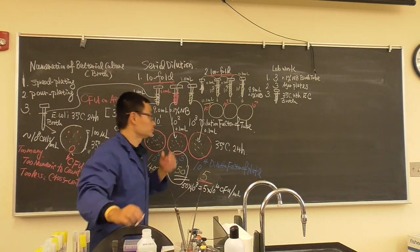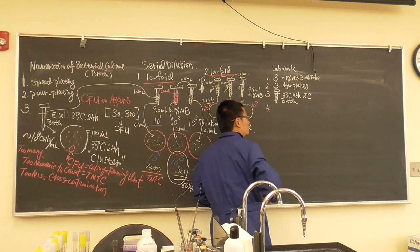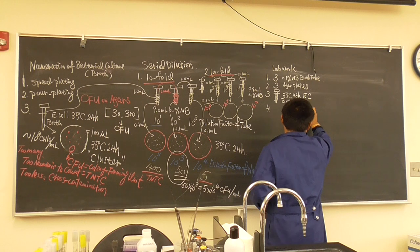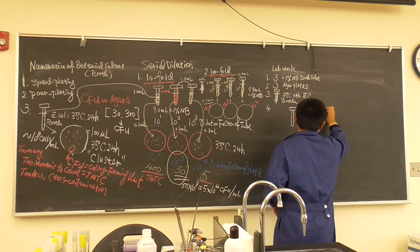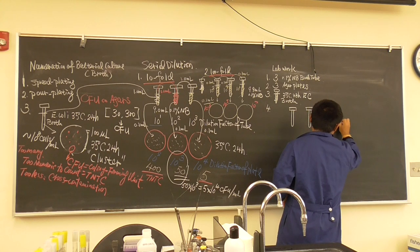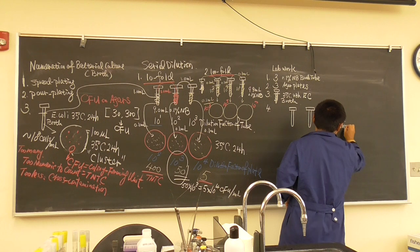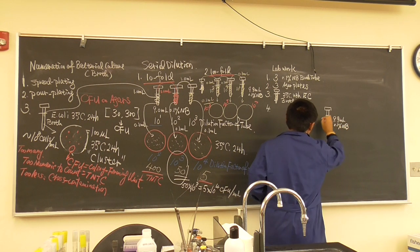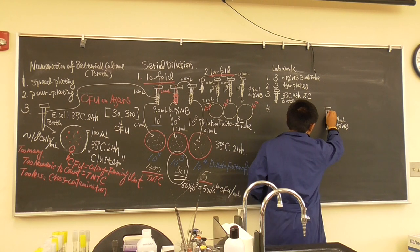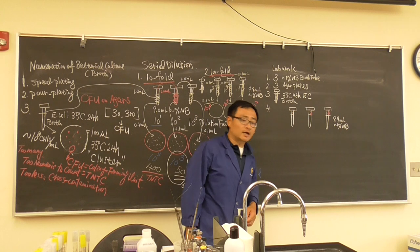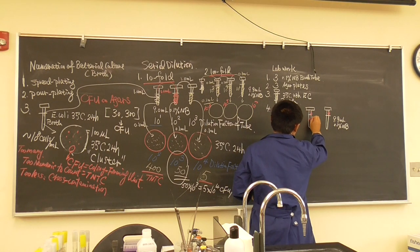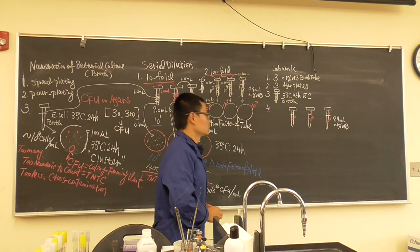First thing: do the serial dilution. You have three tubes, each already containing 9.9 ml of 0.1% nutrient broth. Label them 1, 2, 3 and write the dilution factor on each tube: the first one is 10 to the 2, the second is 10 to the 4, and the third is 10 to the 6. This is the first step.